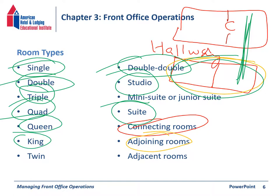A twin is a room with a twin bed. Mini suites and junior suites are somewhat larger than a traditional room. Presidential suites are the largest suite in the hotel. Junior suites fall between the Presidential and traditional suites.